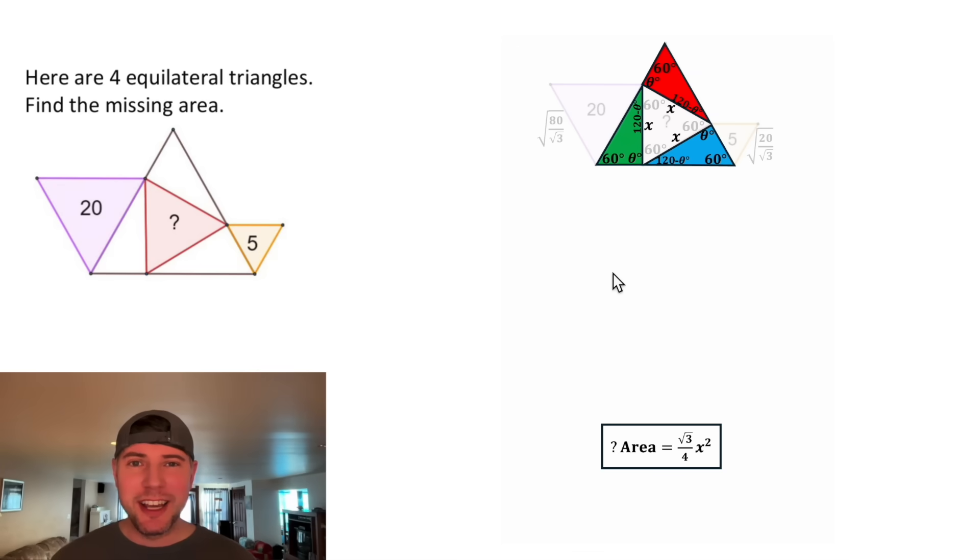All their corresponding angles are congruent, and all their corresponding sides are congruent. Now if we go back to this triangle, since this side was this square root, this side will also be the same square root. That's the largest side of this green triangle. Well, it's also going to be the largest side of the blue triangle.